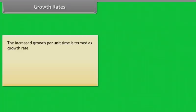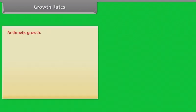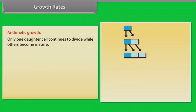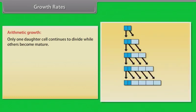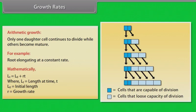Growth rates. The increased growth per unit time is termed as growth rate. Plants show two types of growth: arithmetic and geometric. Arithmetic growth. Only one daughter cell continues to divide while others become mature. For example, root elongating at a constant rate. Mathematically, Lt equals L0 plus Rt.